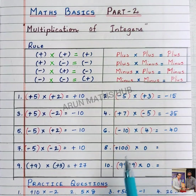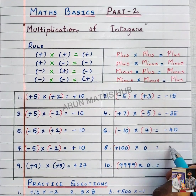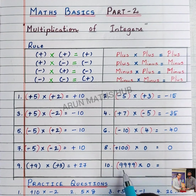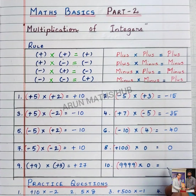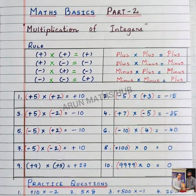Now, if you multiply any integer or any number with zero, we get zero again. This is an important property. Nine thousand nine hundred and ninety-nine into zero is zero again. If you multiply any number with zero, you get zero.